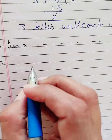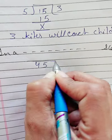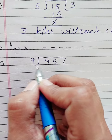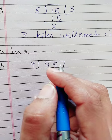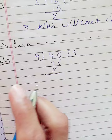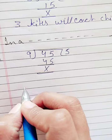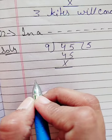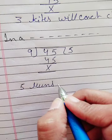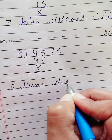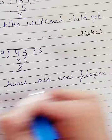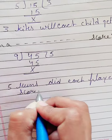You will solve it like this: 45 divided by 9. Now read the table of nine — nine one is nine, nine two is eighteen, nine three is twenty-seven, nine four is thirty-six, and nine five is forty-five. So the answer is five runs — each player scored five runs.